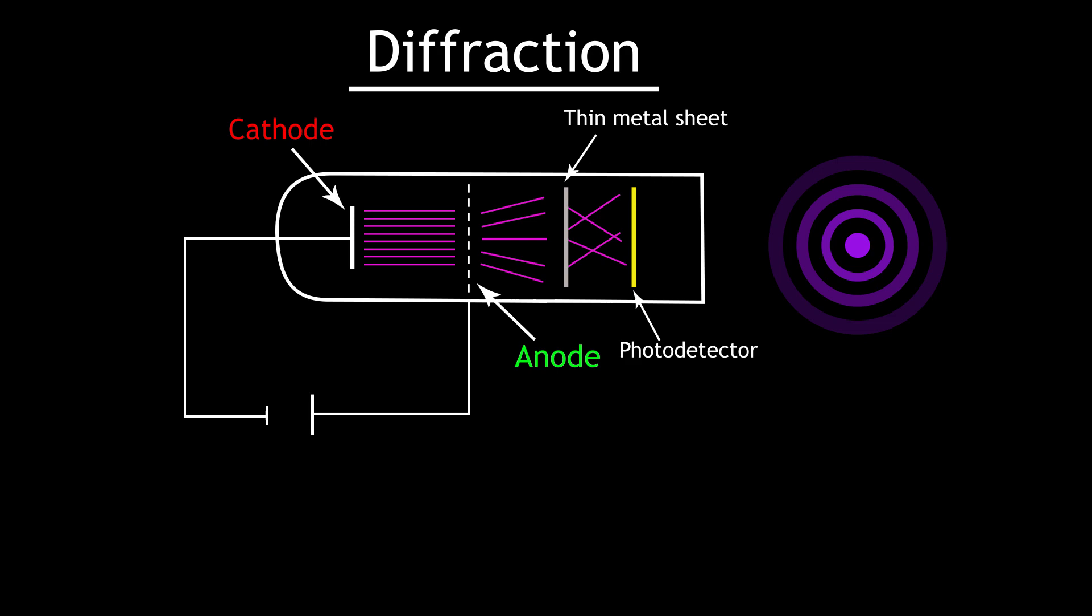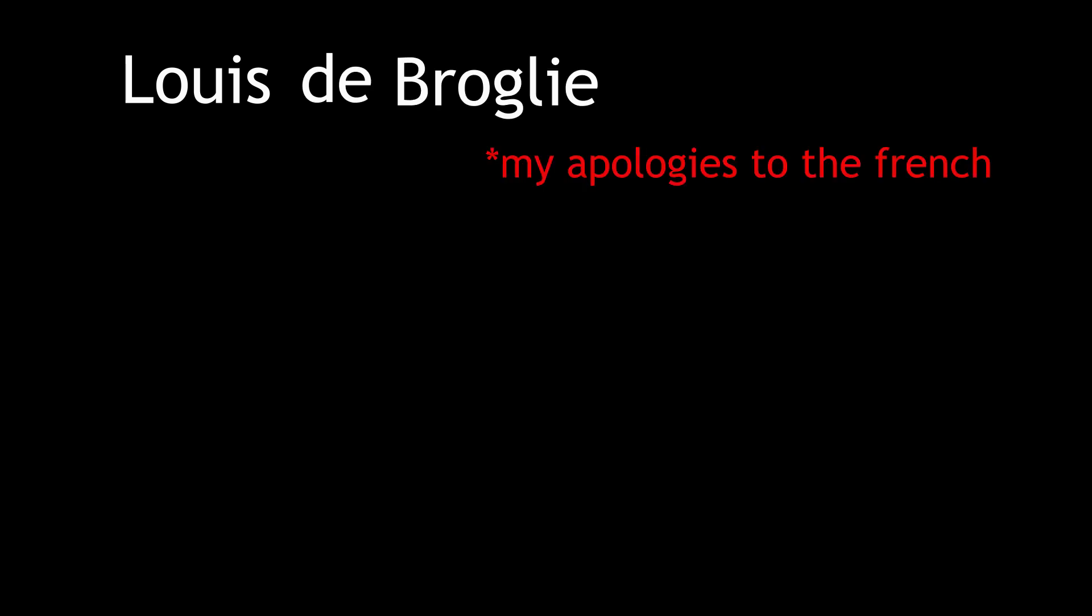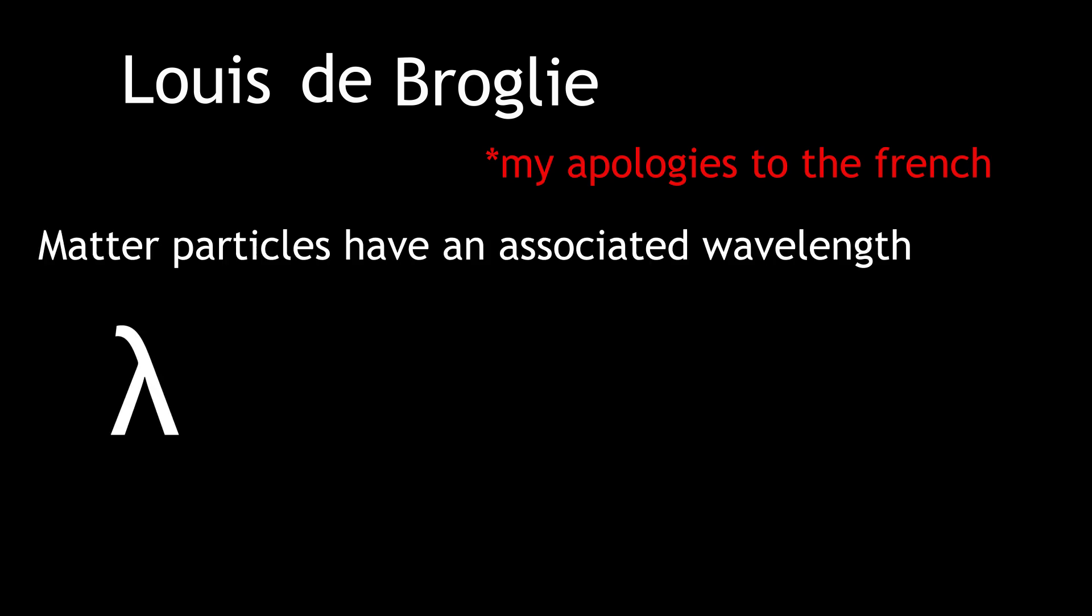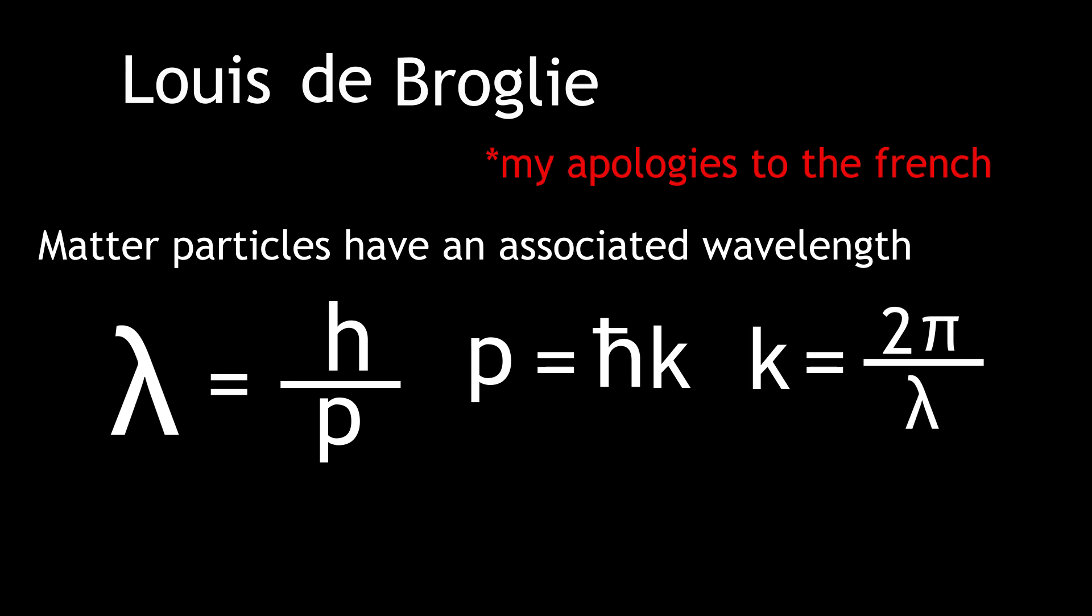The wave-particle duality of matter is what led Louis de Broglie to postulate that matter particles had some wavelength lambda inversely proportional to their momentum by Planck's constant h, or equivalently p equals h bar k. So with the wave-particle duality of all things firmly in place, physicists were able to answer a really important question. Why haven't all of the atoms exploded?